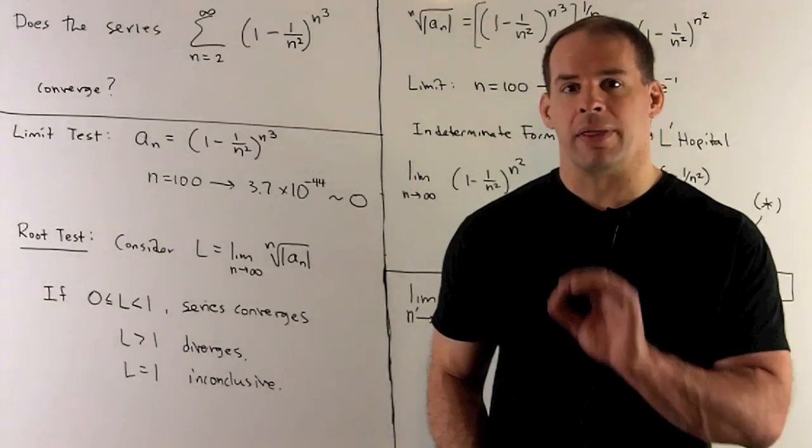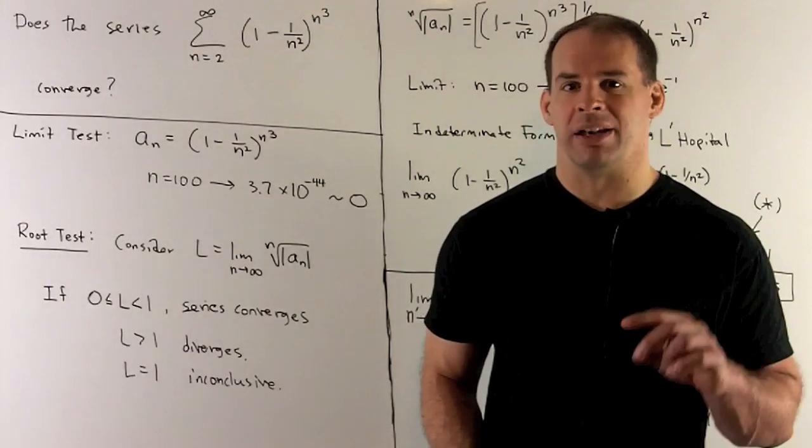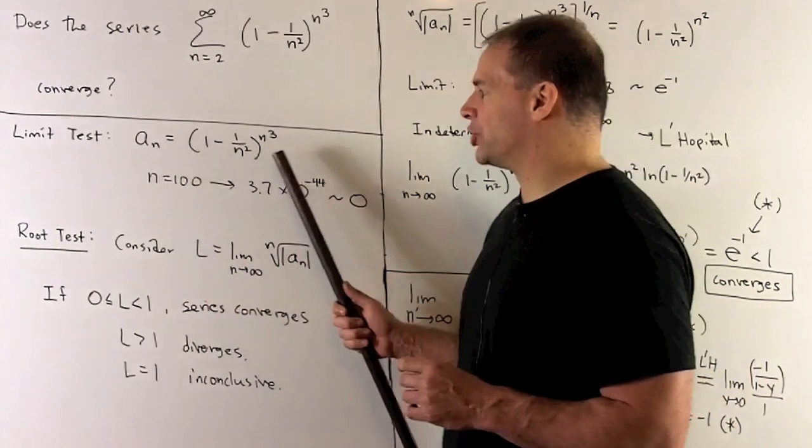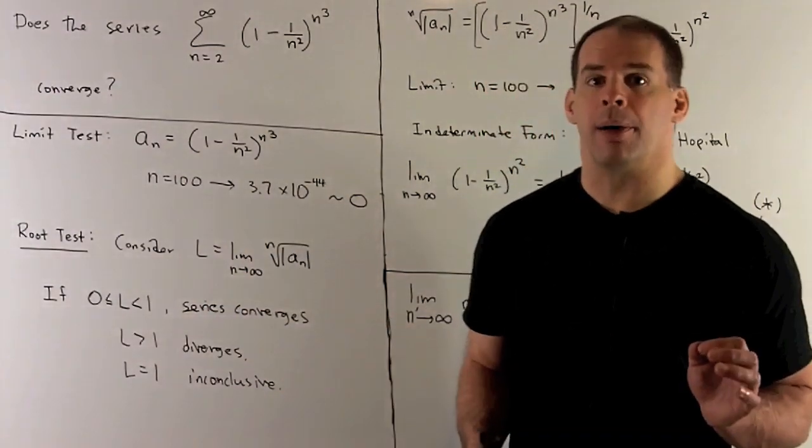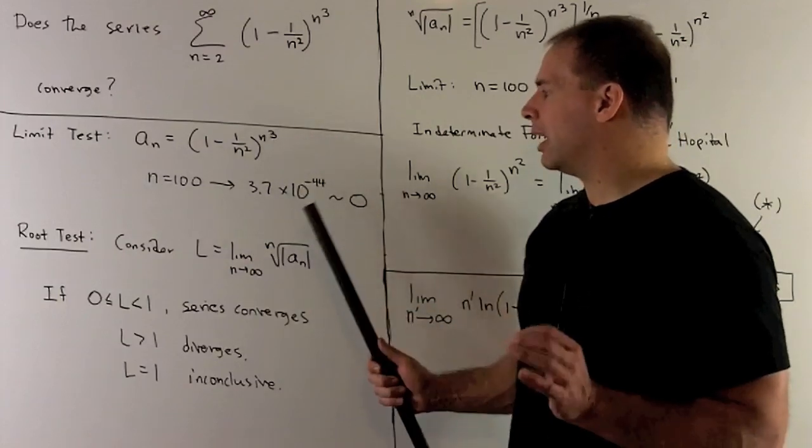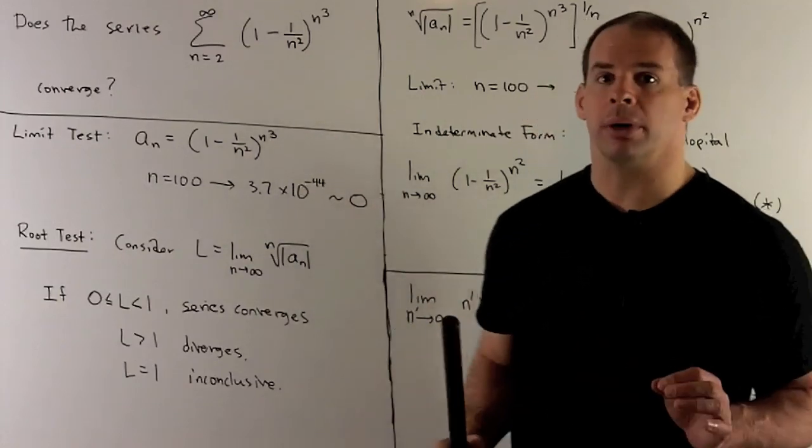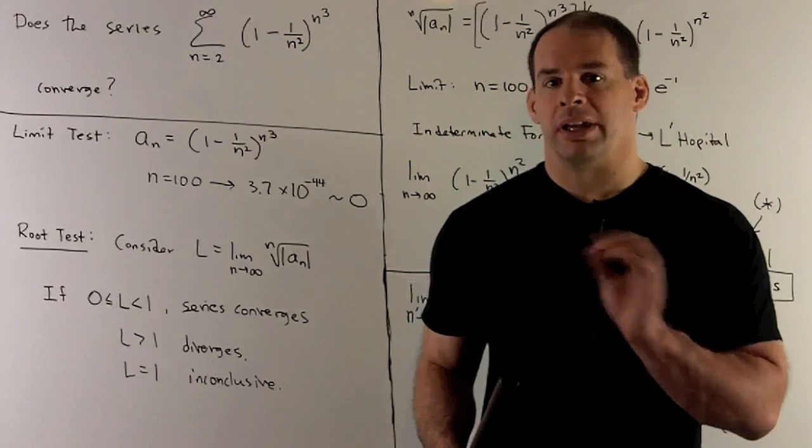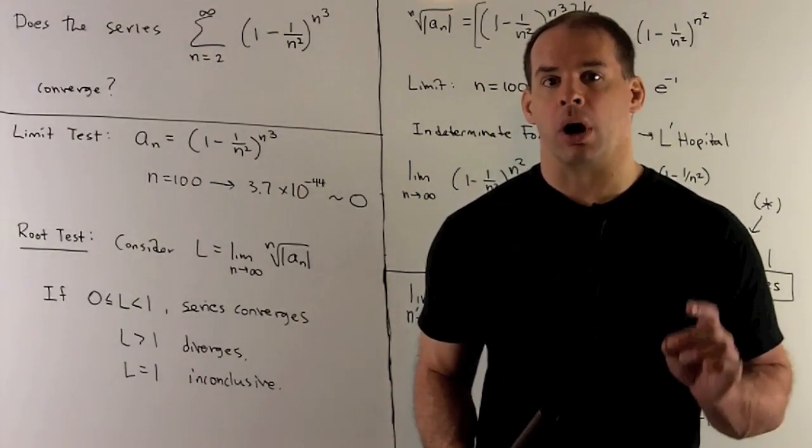Rather than do all that work, let's just stick in a big number, so we'll take n equals 100 into our general term, see what comes out. I go to the calculator, we crunch this out, and what comes out is going to be a really small number. So here, the answer is inconclusive. We need to do more work.